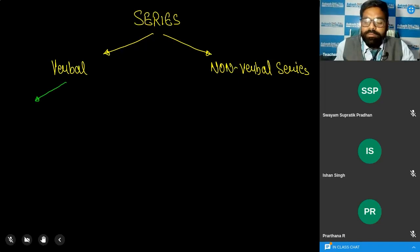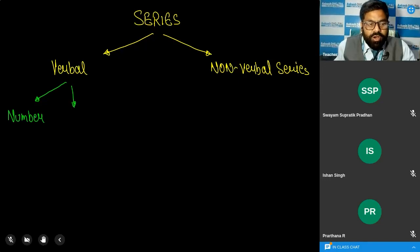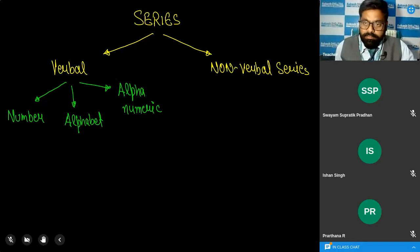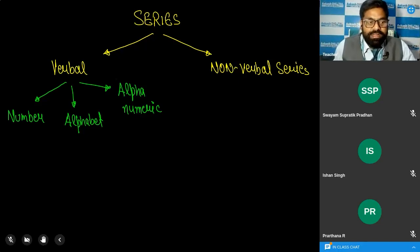The verbal series is divided into three types. The first one is called the number series, the second one is called the alphabet series, and the third one is called the alphanumeric series. In the number series, numbers are used — for example, let's take an example.